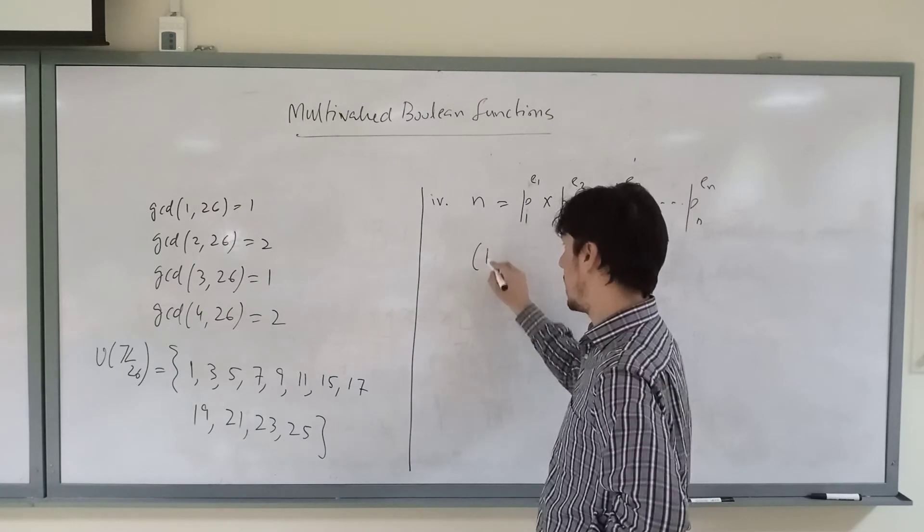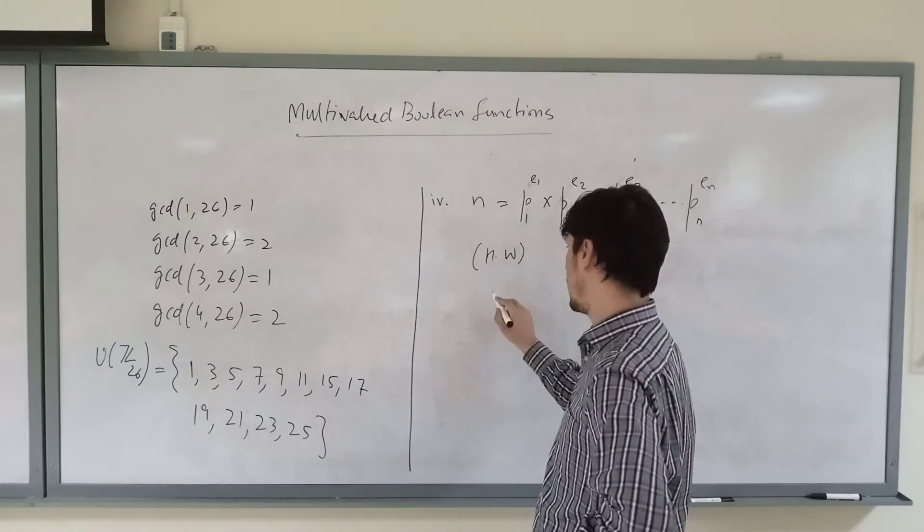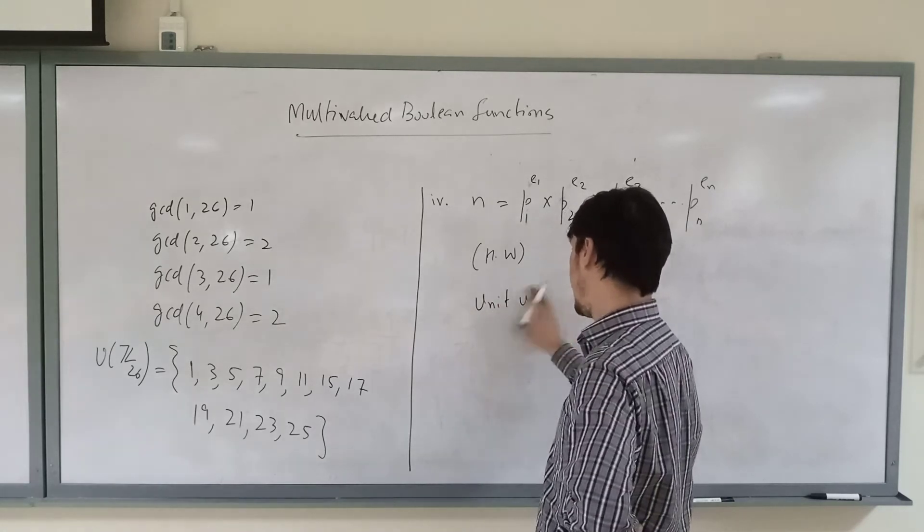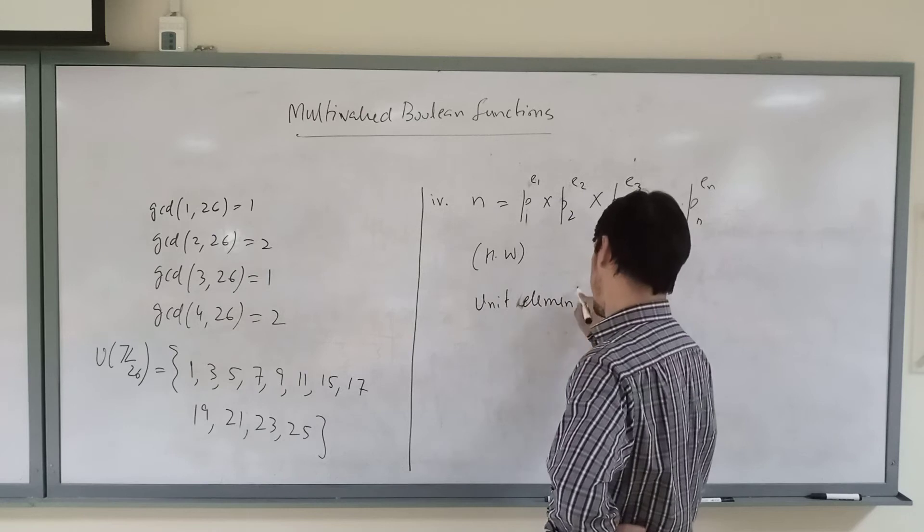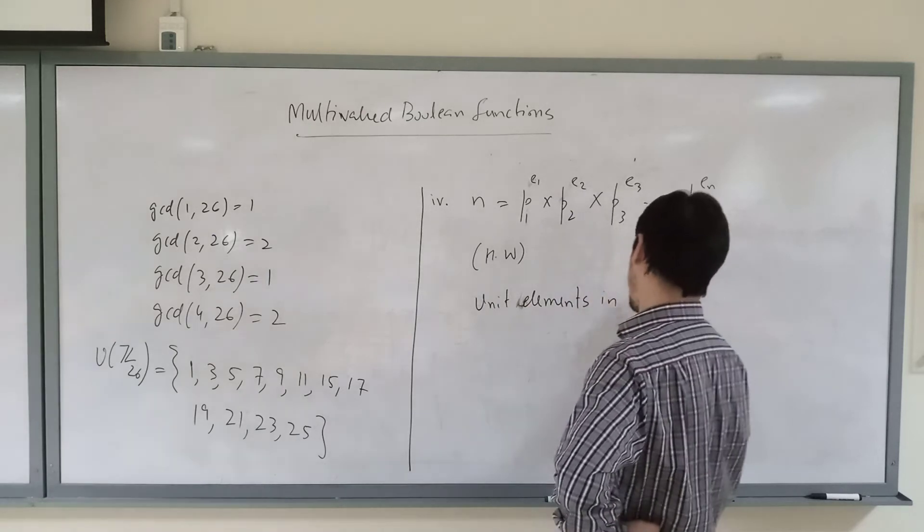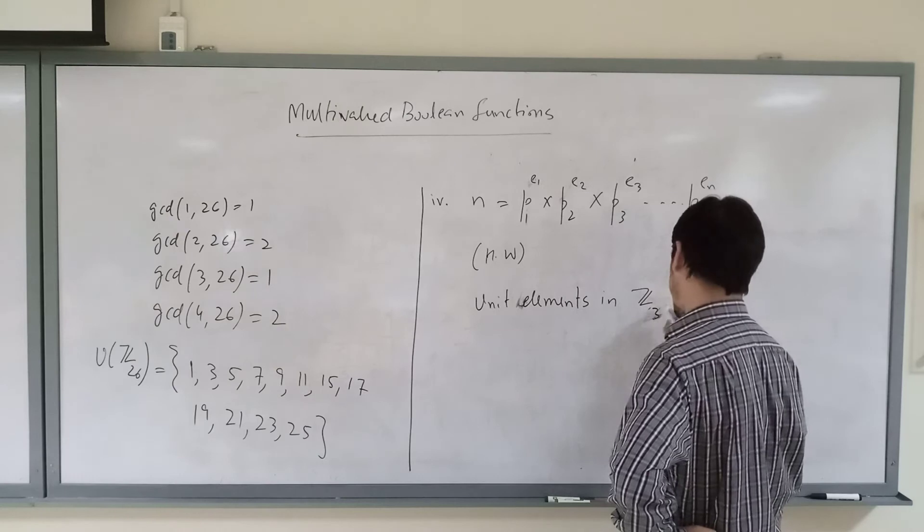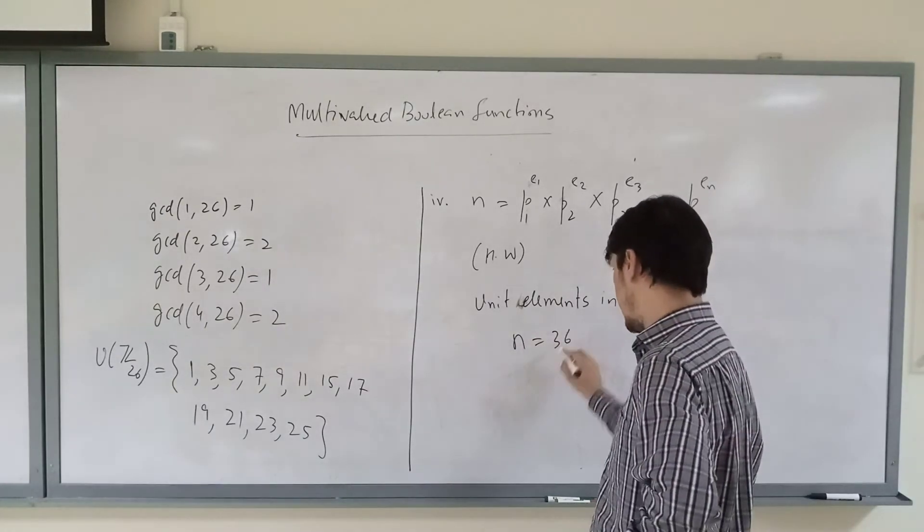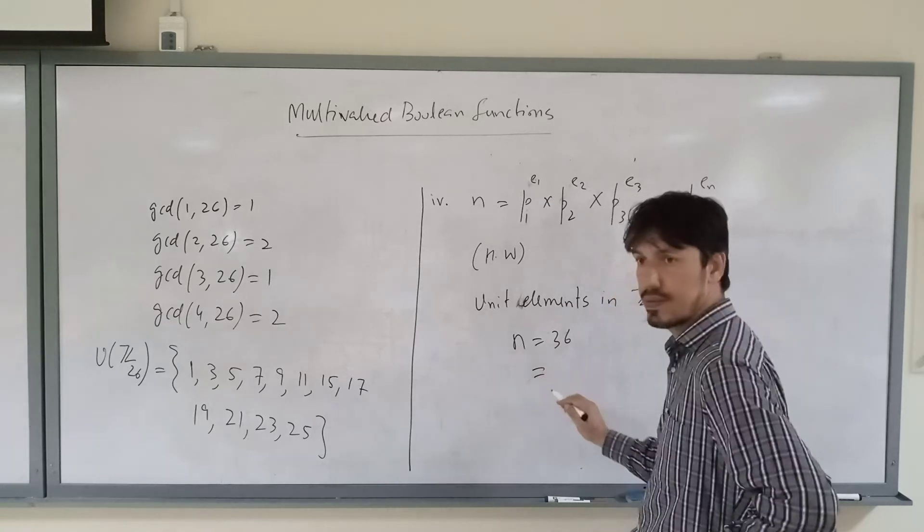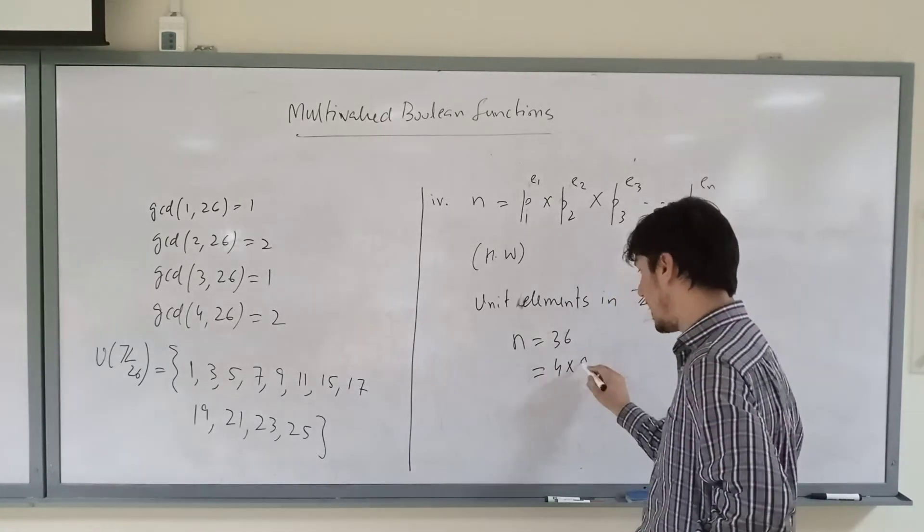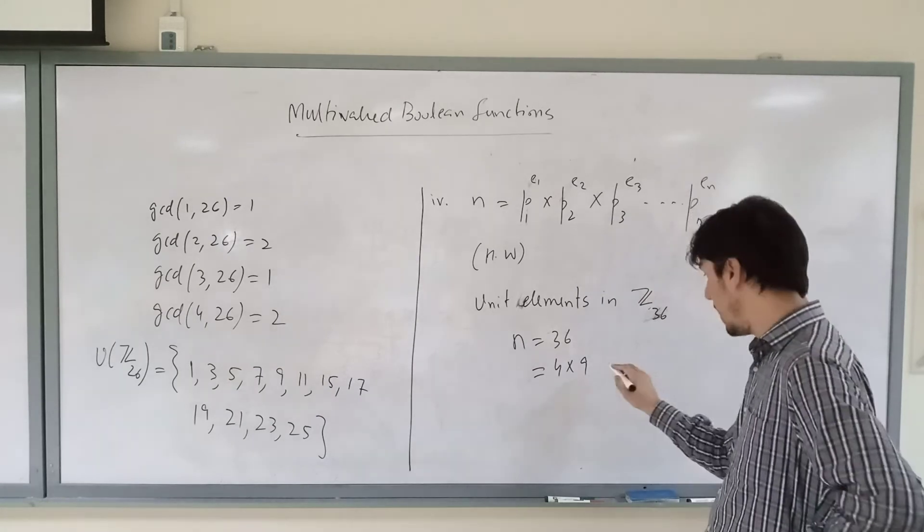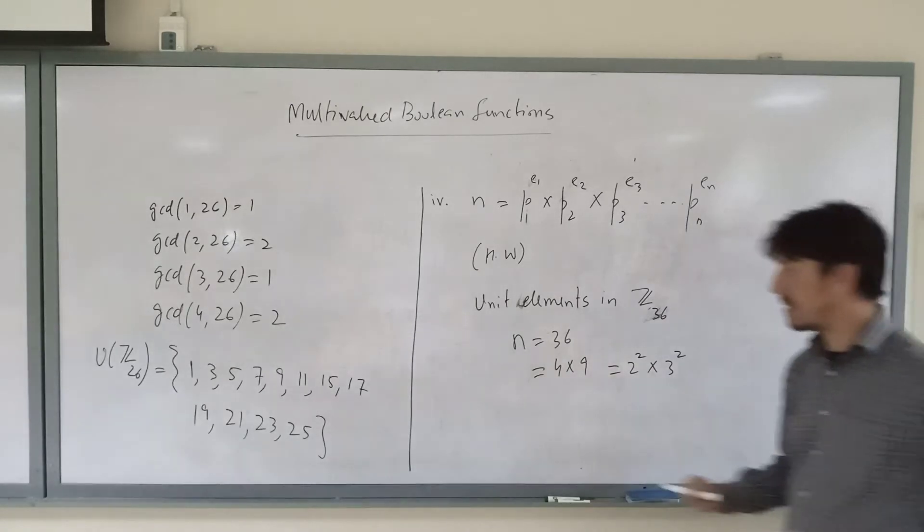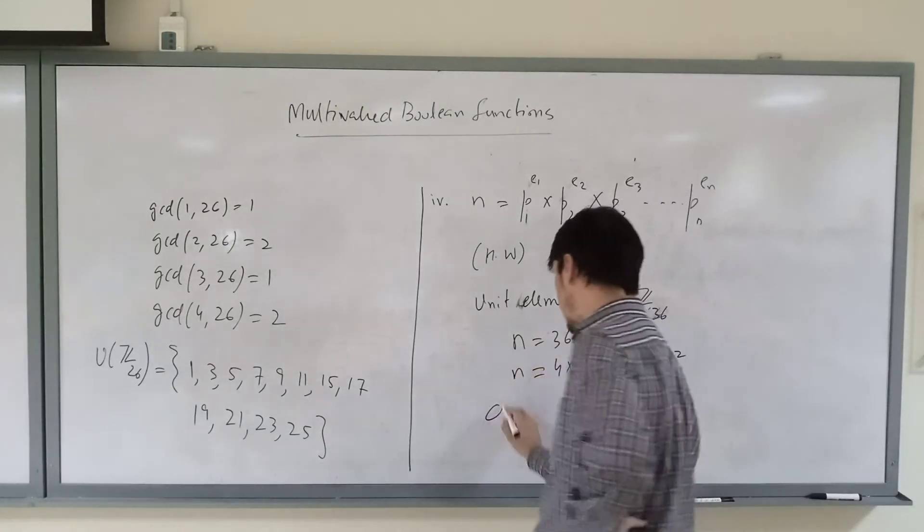For unit elements in Z 36, here n is 36 and it can be written as 4 into 9, which is 2^2 into 3^2. So in that case the phi function will be calculated accordingly.